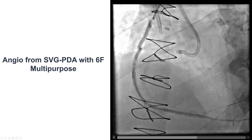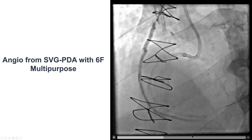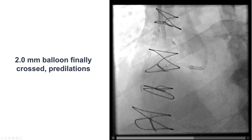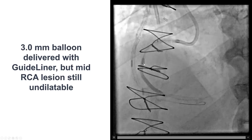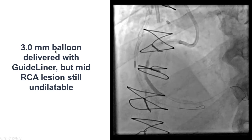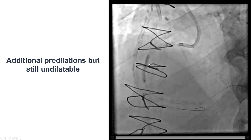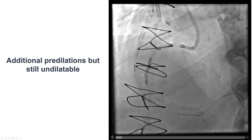There was some competitive flow in the PDA from the saphenous vein graft. The saphenous vein graft did have a 90% stenosis at the ostium. We went back to the native right coronary artery and tried to cross with a 2.0 mm balloon, but unfortunately we were not able to cross. We used a guide extension and were able to advance a 3.0 mm balloon to the mid-RCA, but the lesion in the mid-right coronary remained balloon undilatable — despite going to high pressures of 26–28 atmospheres, we were unable to expand this lesion.